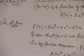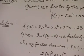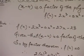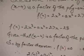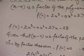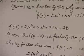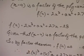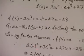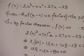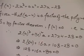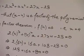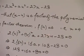Given that (x - 4) is a factor of the polynomial, by the factor theorem or remainder theorem, f(4) = 0, that is x = 4. Now putting the value of x = 4 into the equation, we get: 2 × 4³ + a × 4² + 27 × 4 - 28 = 0.